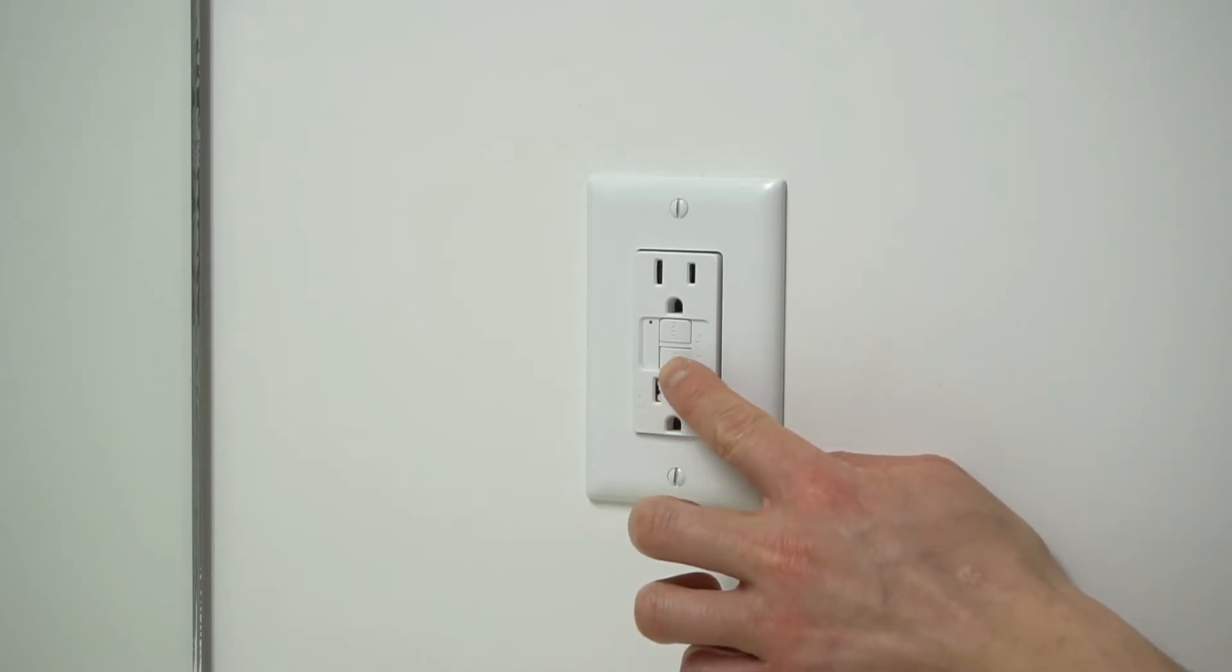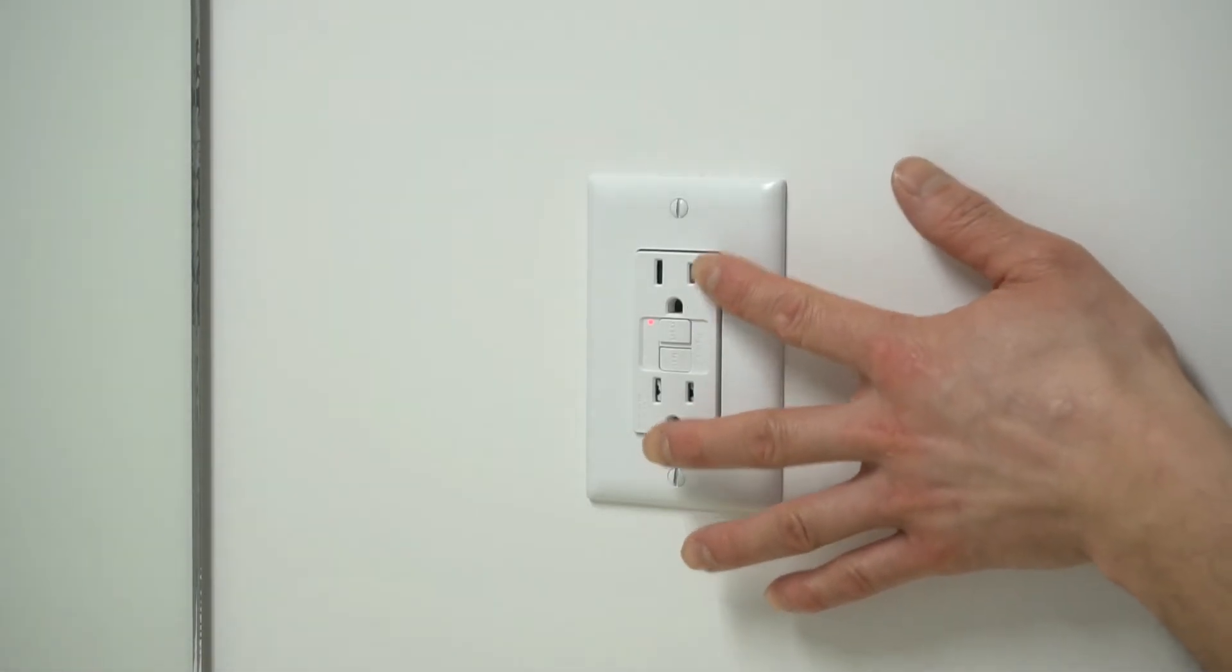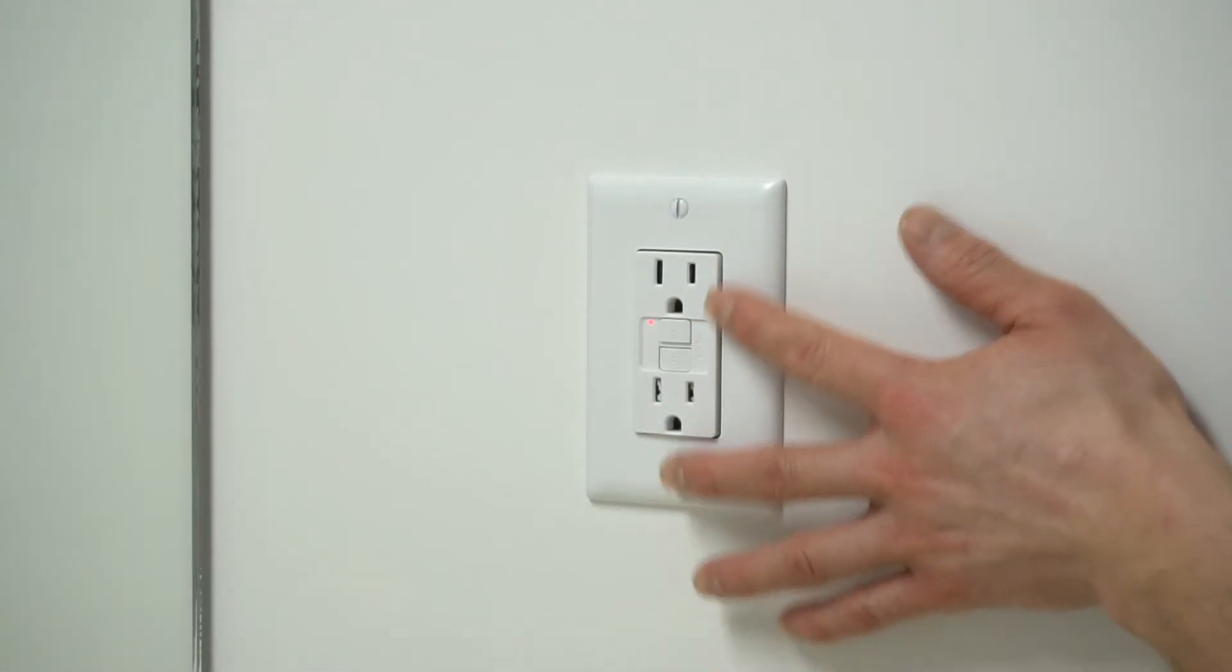Now if I press the test button, it will trip this plug. Perfect. The plug is tripped and the status light is on. That means there will be no power coming out of these outlets.